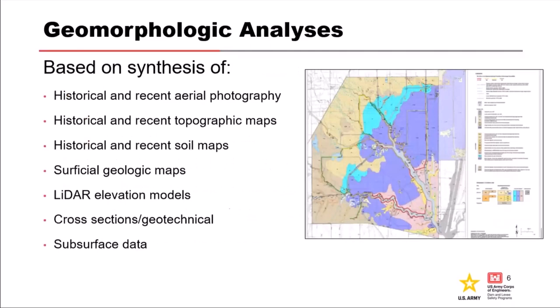This is a vignette from a project in California. Mapping is important to delineate the type and distribution of materials in the surface and shallow subsurface, relating to geomorphology and depositional environments. This is a synthesis of historical and recent aerial photography, including 1938 aerial photography, historic topographic maps from the USGS, historical soil maps, and LIDAR. Ultimately, we need to marry the geomorphology, geology, and geotechnical information onto cross sections.